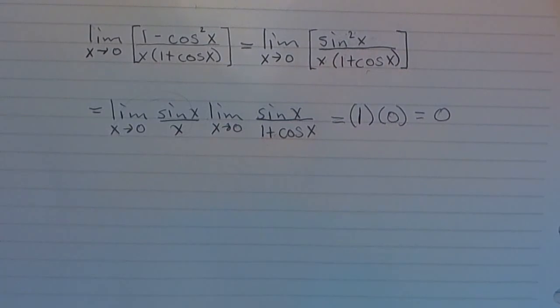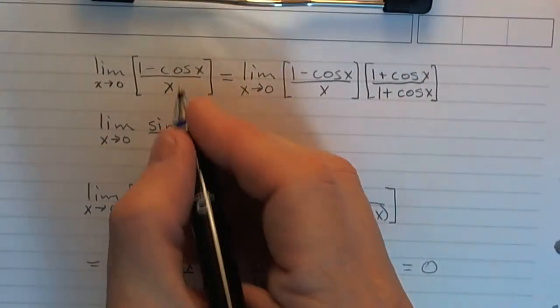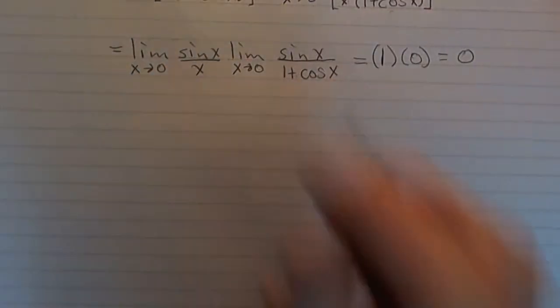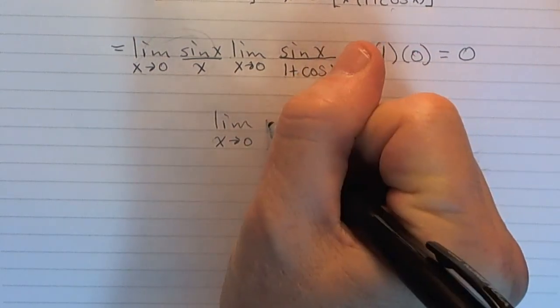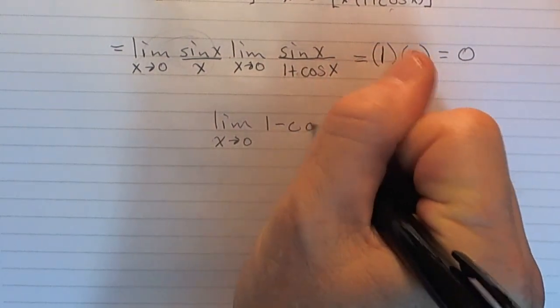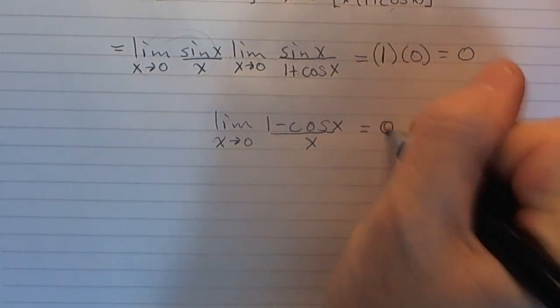So 1 times 0 is 0. So we figured out what this limit is right here, this limit. This is one of our celebrity limits. It's the limit as x goes to 0 of 1 minus cosine x over x is equal to 0.